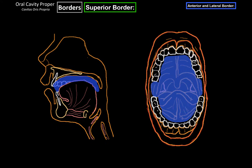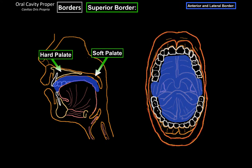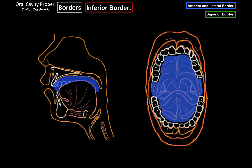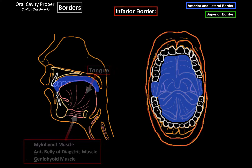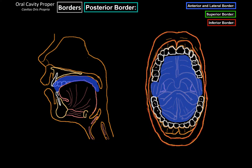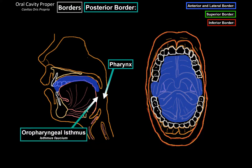Superiorly, you will find the hard palate and the soft palate. The inferior border consists of the floor of the oral cavity, which is made up of three muscles: the mylohyoid, anterior belly of the digastric, and the geniohyoid muscle. You will find the tongue here as well. Posteriorly, the oral cavity will continue into the pharynx through the oropharyngeal isthmus.